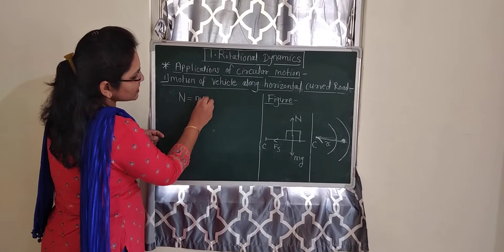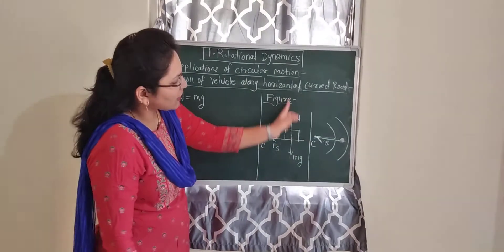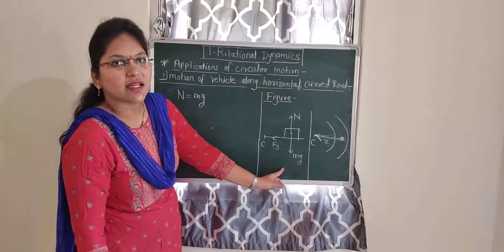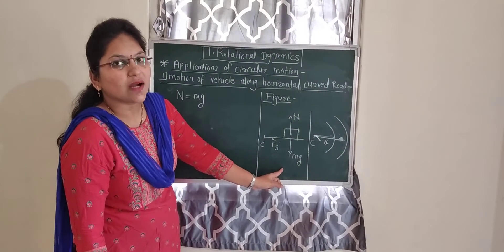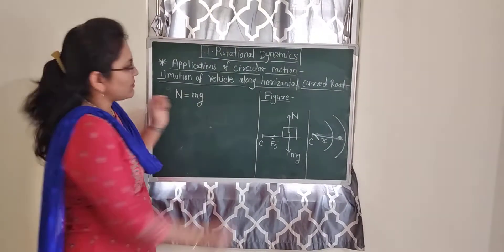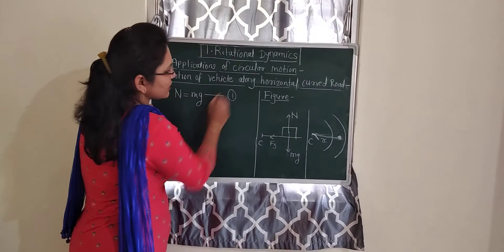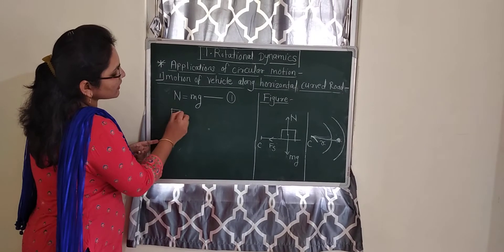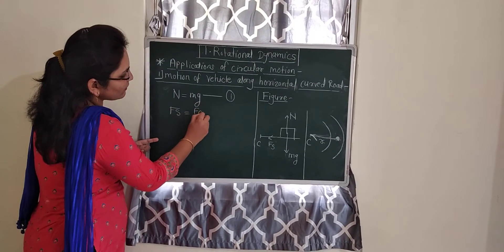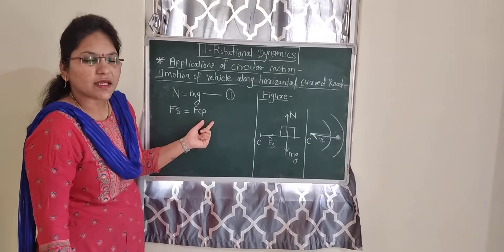For the vertical equilibrium of the vehicle: total upward force equals total downward force, therefore N = Mg. This is equation one. From equation two: Fs = Fcp = MV²/R, where M is the mass of the vehicle and R is the radius of curvature.